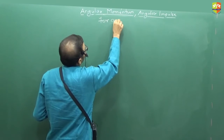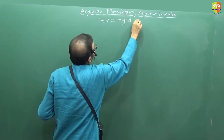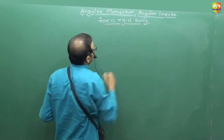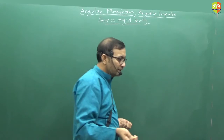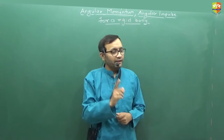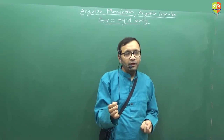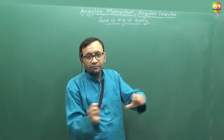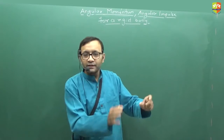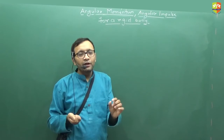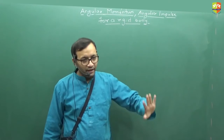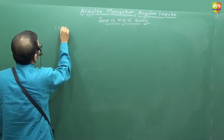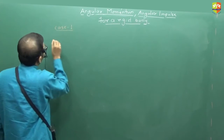For a rigid body, we are trying to find the angular momentum. Two cases we will consider, like always: fixed axis, and rotation plus translation. If the entire rigid body is moving with the same velocity and not rotating, it is as good as a point mass moving — you can consider the entire rigid body as a point mass located at the center of mass. That case we have already considered. Now we are considering case number one: fixed axis.